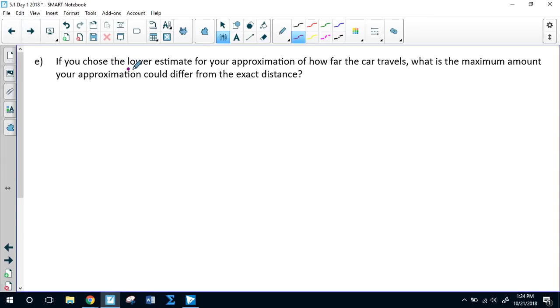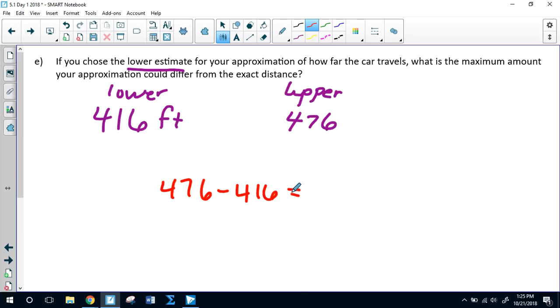So then this question says, if you chose the lower estimate, which is 416 feet for your approximation, what is the maximum amount your approximation can differ from the exact amount? So remember, this is the lower, and I hope you recognized that the upper was 476. Both of these are approximations, and they're both wrong. This one is too small, and this one's too big. So what that means is if you subtract the two, you will get the maximum difference between your estimate and the actual distance, and this is a total of 60 feet. So at most, your estimate is off by 60 feet. That would be if you chose the lower, and the upper was actually the correct estimate, which, granted, we don't know exactly because we don't know what's happening in the middle, but these are, neither one of these are probably correct.